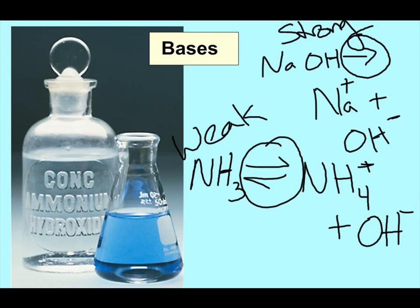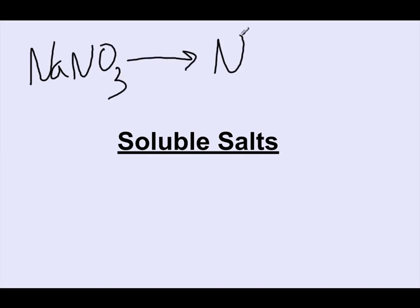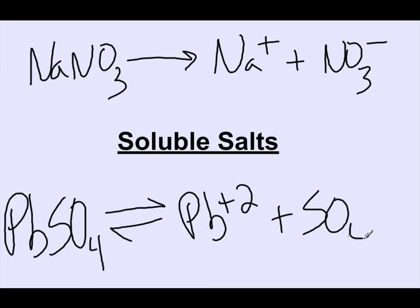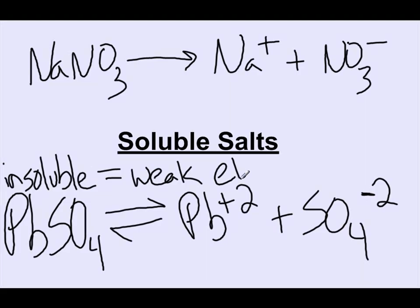Strong acids and strong bases completely ionize. We also have soluble salts, and there's a whole series of solubility rules that discuss which salts are soluble and which are not. For example, sodium nitrate placed into water goes all the way to completion, making sodium cation and nitrate anion. Compare that to something relatively insoluble like lead(II) sulfate, which sets up an equilibrium producing lead(II) cation and sulfate anion — you don't get very much of these ions. Insoluble salts are weak electrolytes.